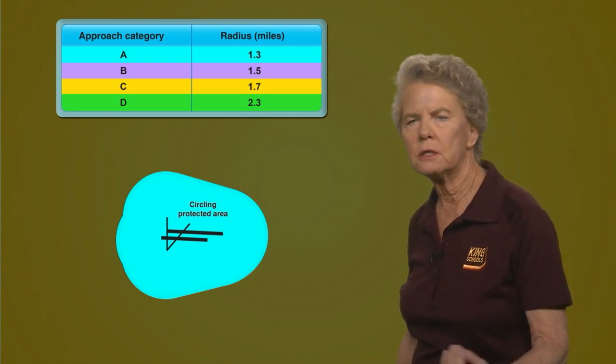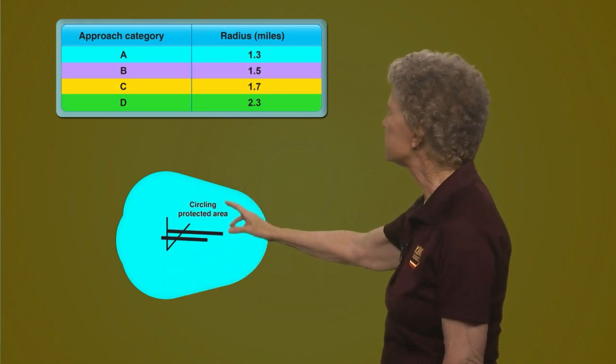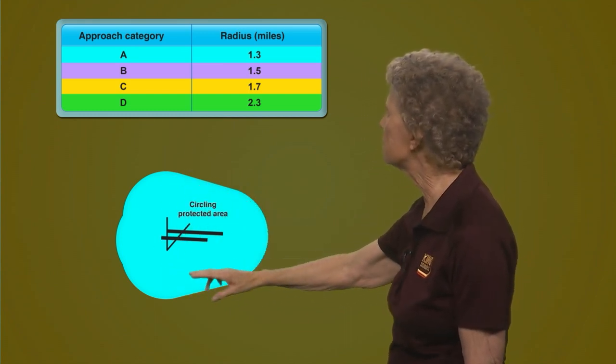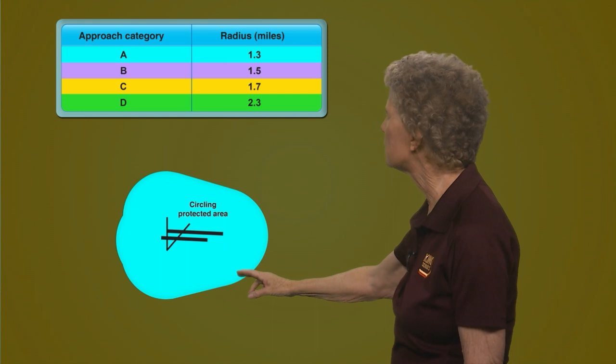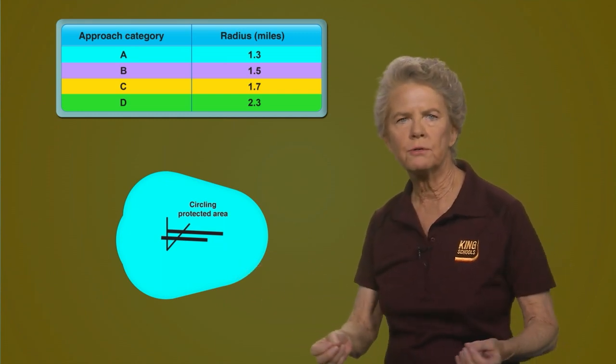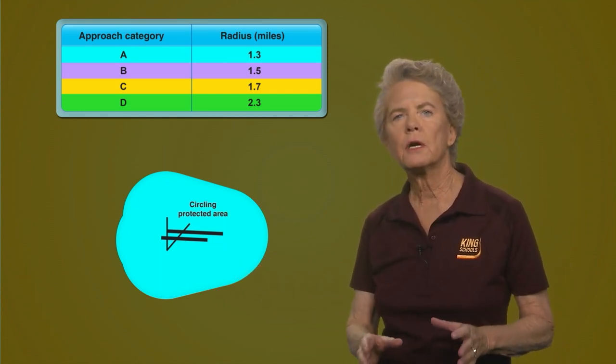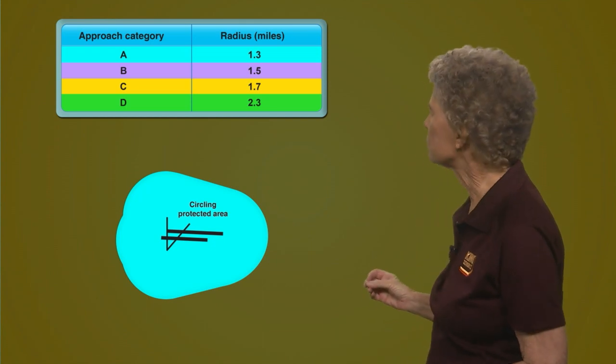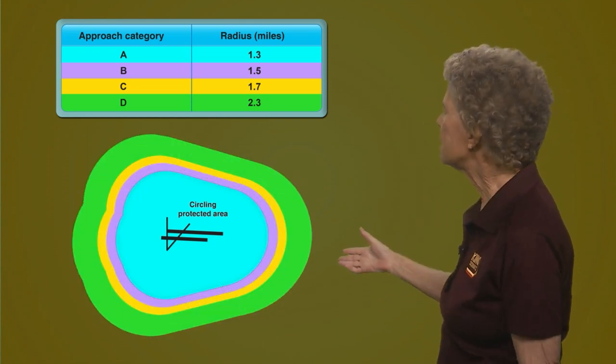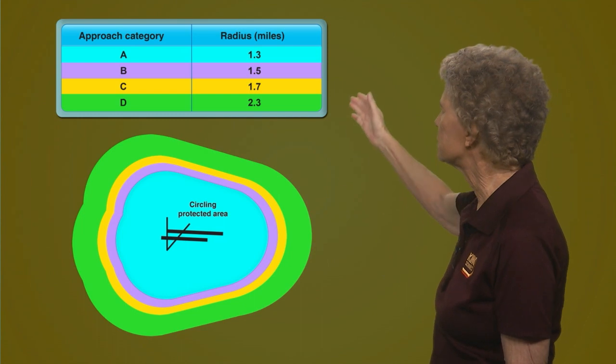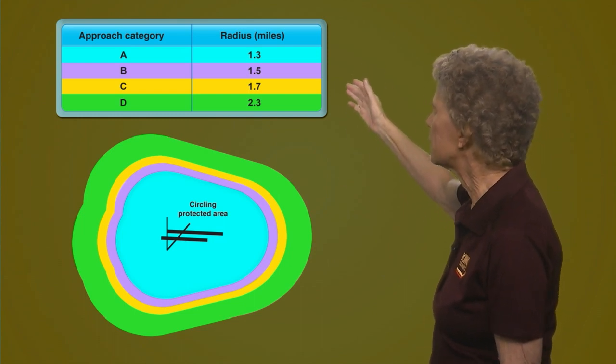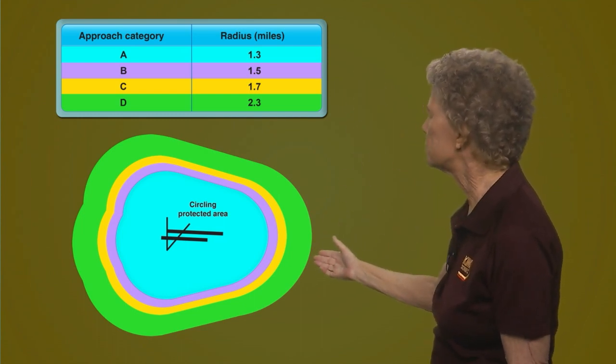So the protected area would look like this. And the assumption is that you will stay within 1.3 nautical miles of the runway while you circle. But if you're flying a category B or C or D aircraft, the radius will be bigger, as you can see, because you're flying faster and need more room to maneuver.